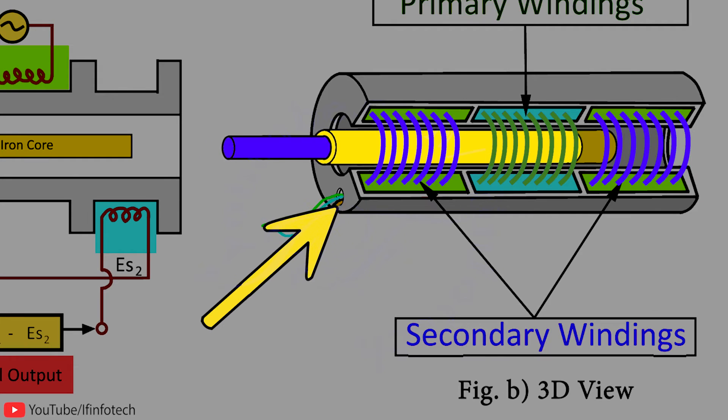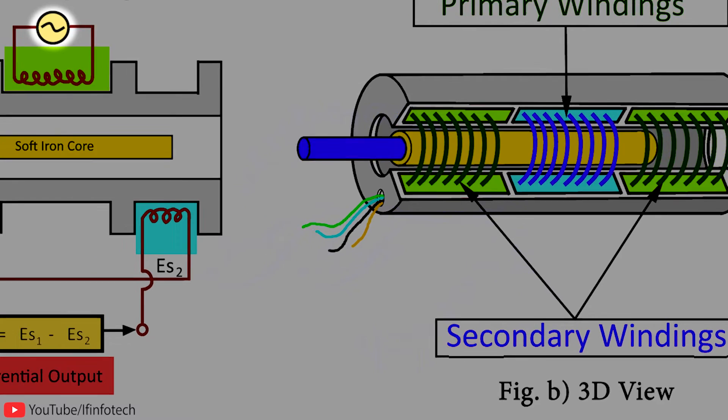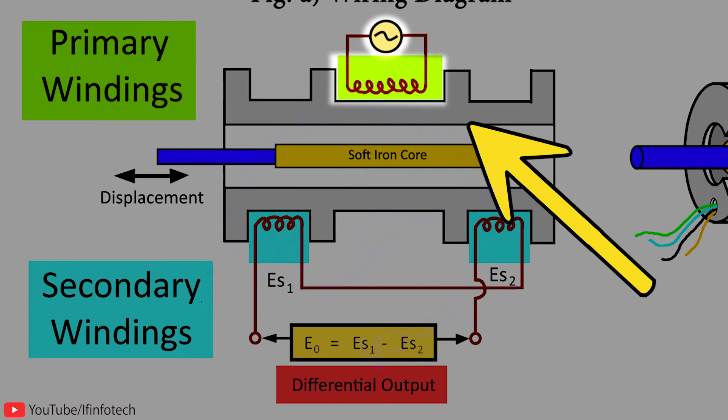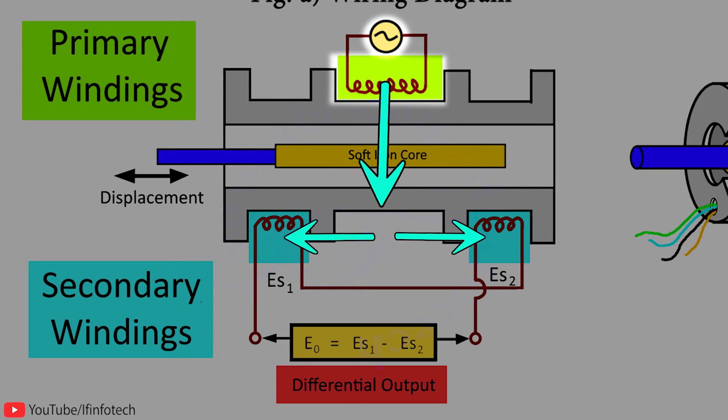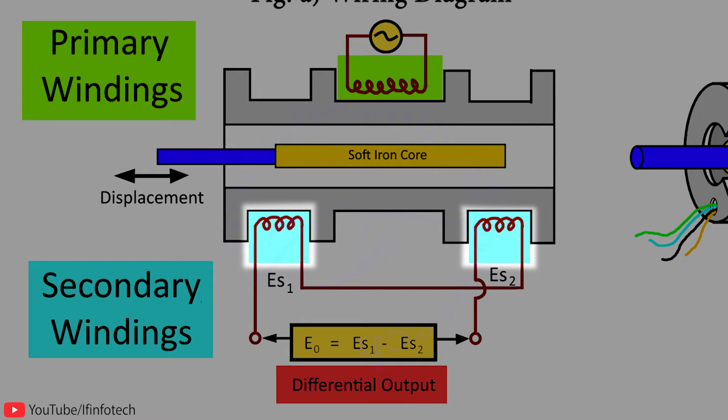Inside the insulating cylinder, a magnetic core is placed which is free to move in either direction. When AC supply is given to the primary windings of LVDT, it produces magnetic flux which completes its path through secondary windings S1. While completing the path, flux produced by primary windings of LVDT links to a number of conductors of secondary windings. Therefore, according to Faraday's Law of Electromagnetic Induction, EMF is induced in secondary windings.